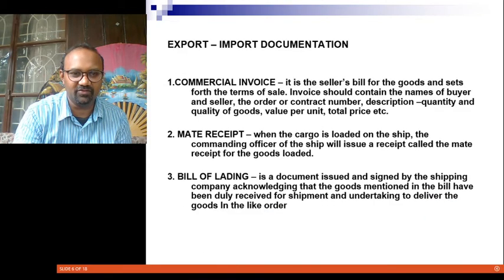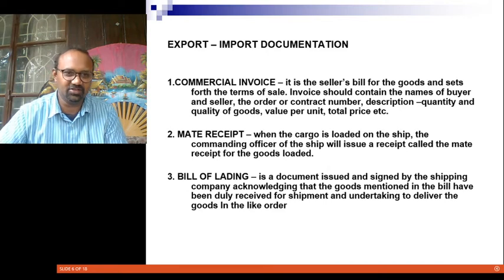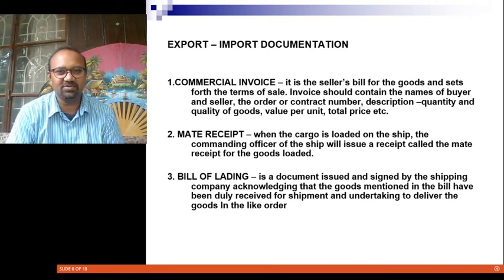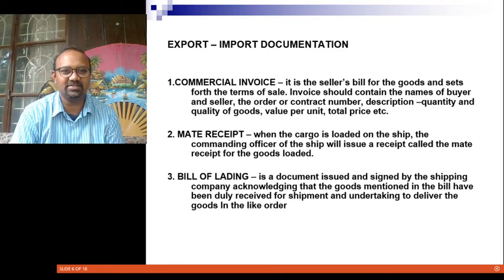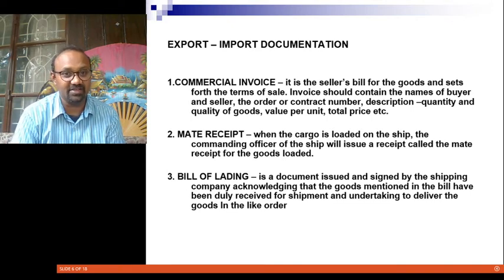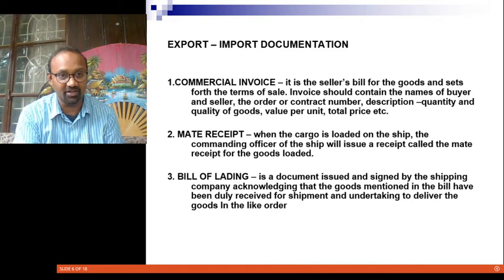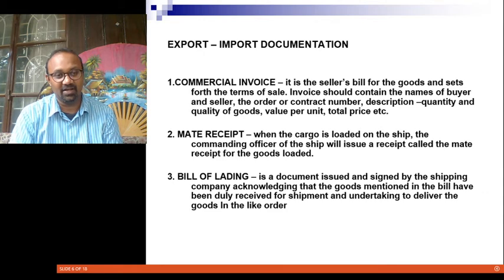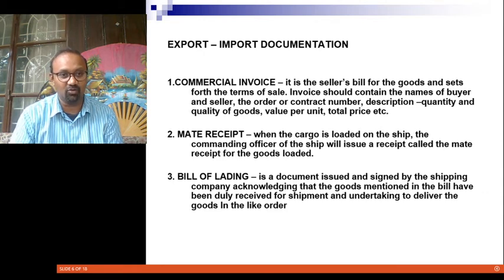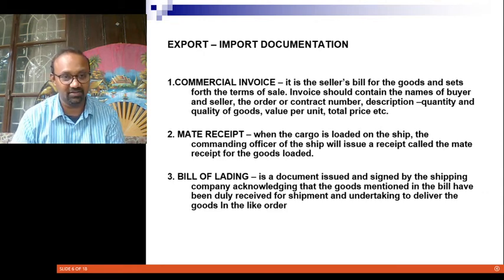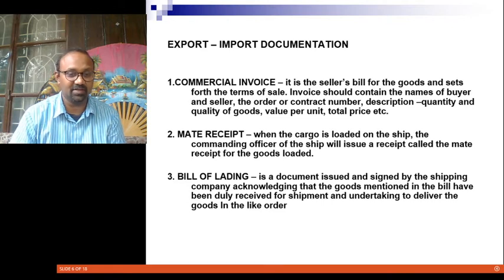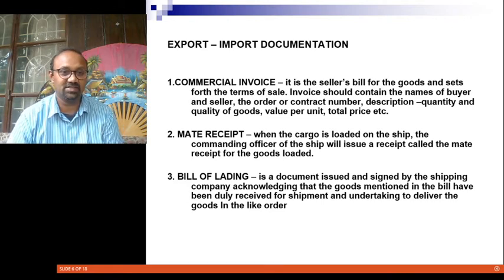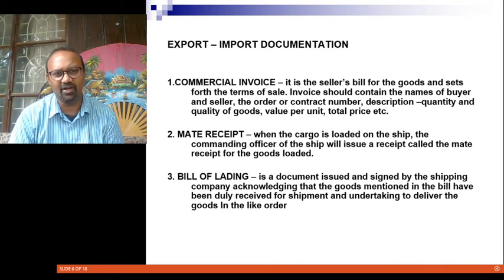Now let's look at all these documents in detail. A Commercial Invoice is the seller's bill for the goods, setting forth the terms of sale. It contains the name of the buyer and seller, the order or contract number, description and quantity of goods, the various items and cost per item, the total quantity exported, and the total price — essentially a bill that accompanies the goods.